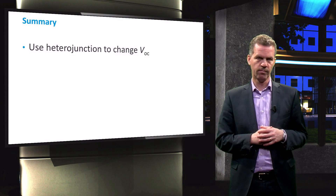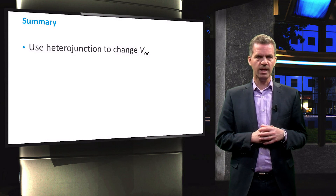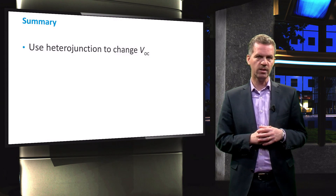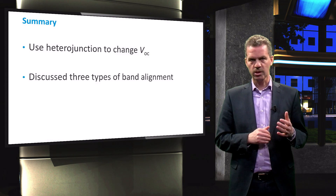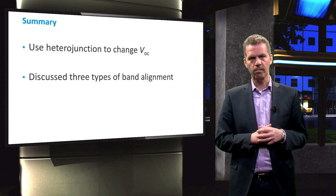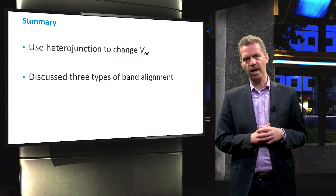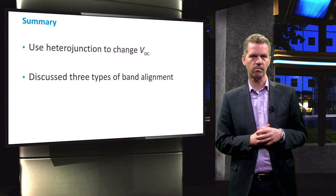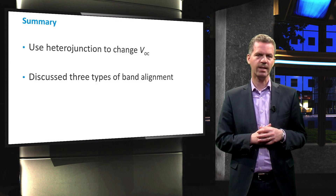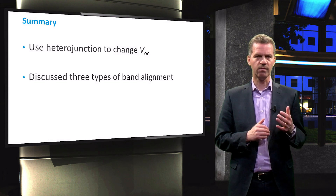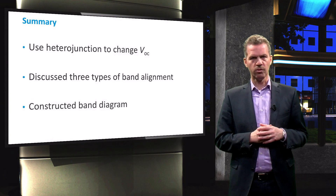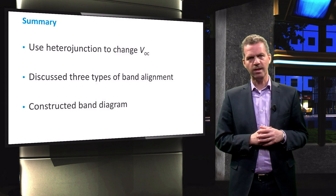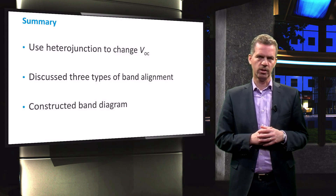To summarize, we have seen that using a heterojunction we are able to change the open circuit voltage VOC. We discussed the three types of band alignment when a junction between two semiconductor materials with different band gaps is formed. And we constructed a band diagram for a straddling-type junction.